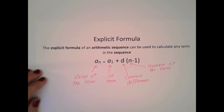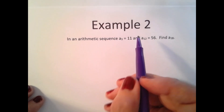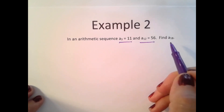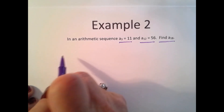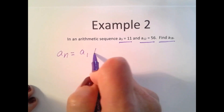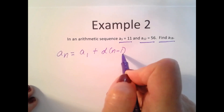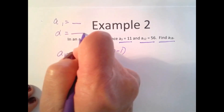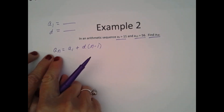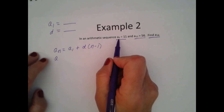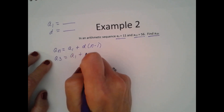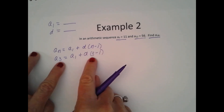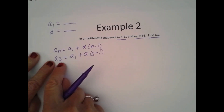Let's use this formula to work some problems. Example 2: In an arithmetic sequence, A sub 3 is equal to 11 and A sub 12 is equal to 56. Find A sub 18. We're going to use our explicit formula: A sub n is equal to A sub 1 plus D times (n minus 1). We need A sub n, A sub 1, and D. We have neither of those. But for A sub 3, I know its value is 11.